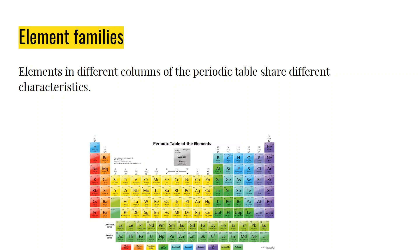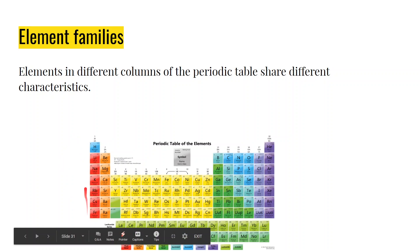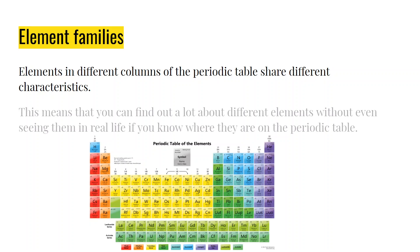Under element families: elements in different columns of the periodic table share different characteristics. The main characteristic that these different elements in the columns share — up and down — is how they bond with different other elements. This means you can find out a lot about different elements without even seeing them in real life, if you know where they are on the periodic table. We can assume that lithium would react similarly to sodium, because they're part of the same element family.